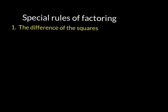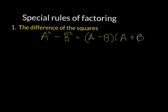The first rule we're going to take a look at is called the difference of squares. It says if you have a squared minus b squared, that is equal to a minus b times a plus b. So if that middle term is missing and there is a subtraction sign in between the two squares, then you can factor it by going a minus b, a plus b.